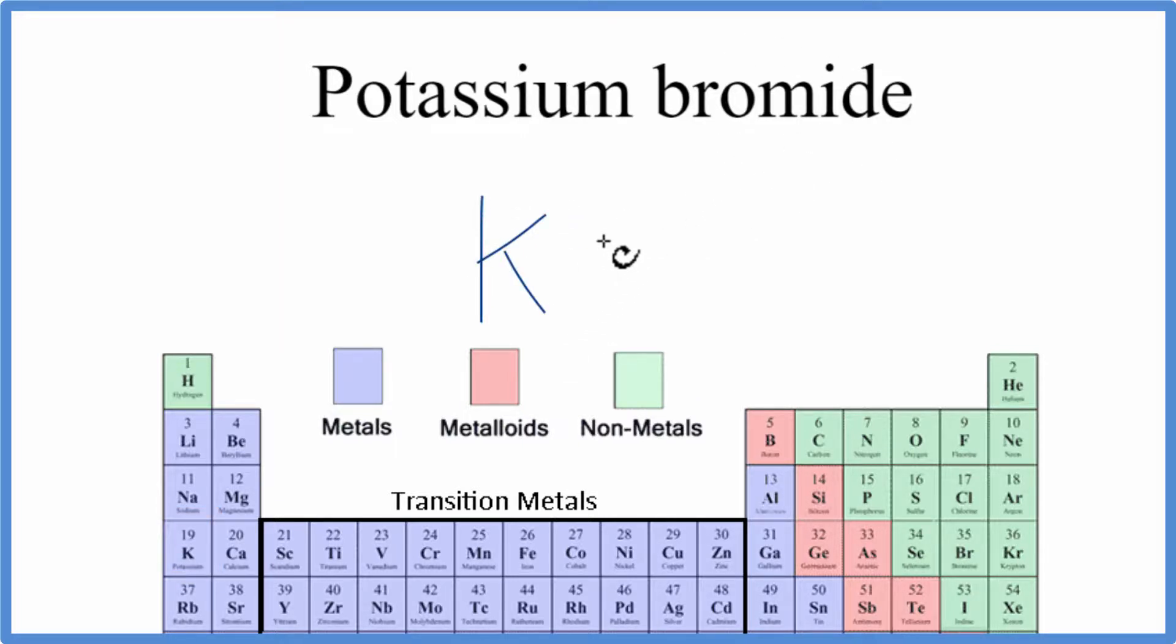We have bromide, that's the bromine, that's Br, and that is a non-metal. When we have a metal and a non-metal, we have an ionic compound.